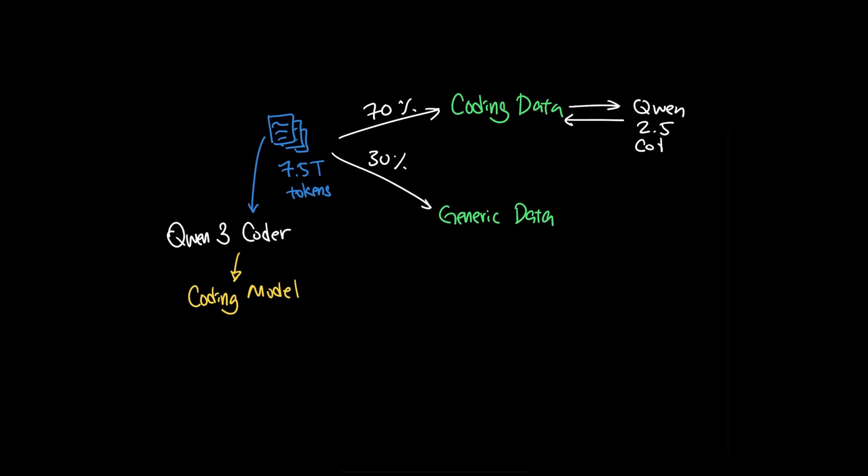And to do this, Alibaba employed synthetic data, which was generated by their previous flagship model to clean out noise in the dataset to improve the quality of the data, which in turn improved the quality of the model.